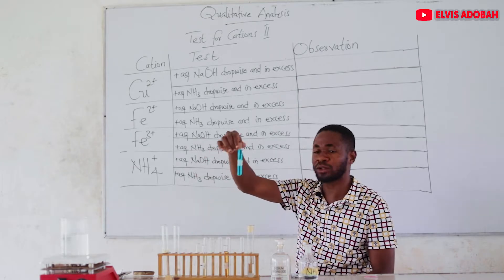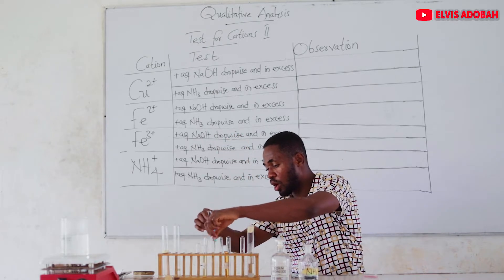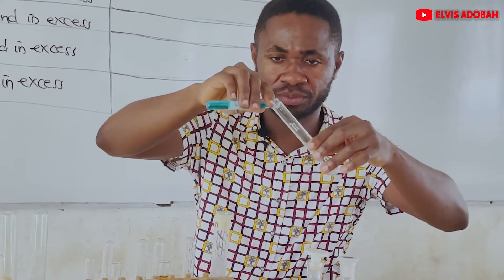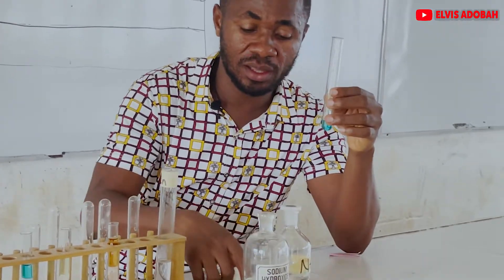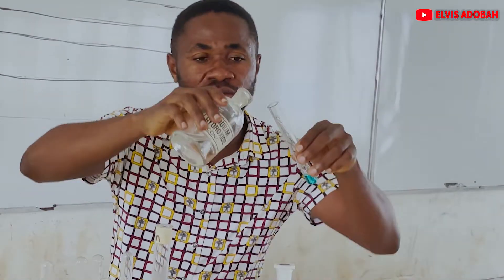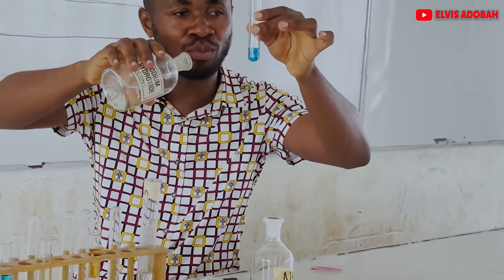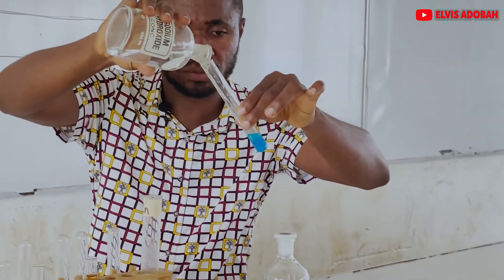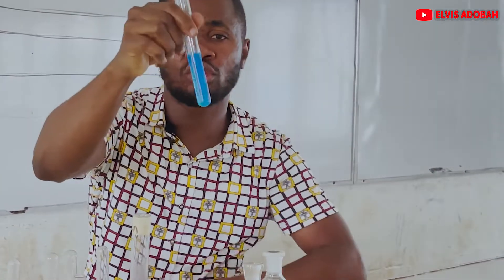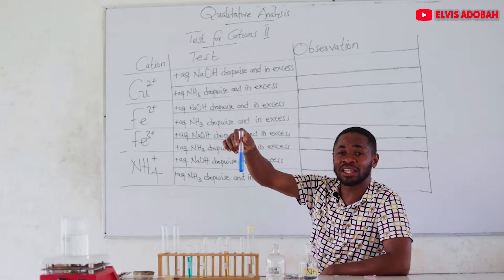Let's start with copper 2+. I'll pour a small amount of my copper 2+ solution in this test tube, then I'll add aqueous sodium hydroxide dropwise. I'm seeing a blue precipitate. Let me add it in excess and see what happens — so I'm forming a blue gelatinous precipitate. I can simply say blue precipitate, insoluble in excess.